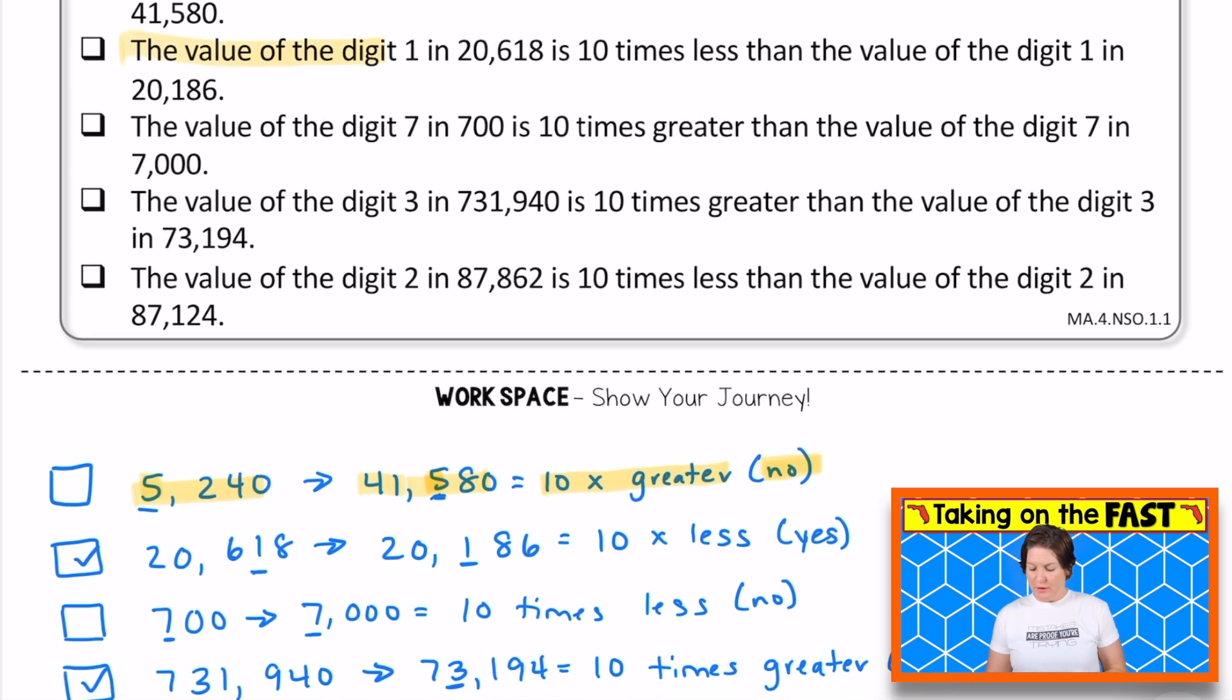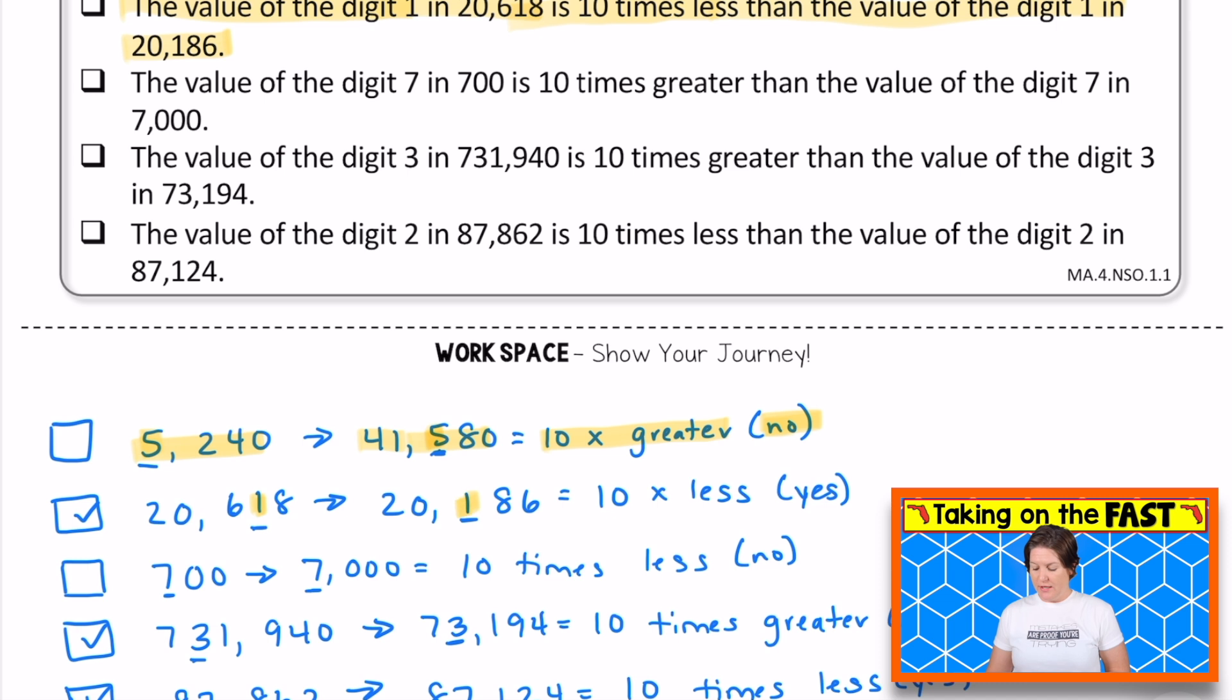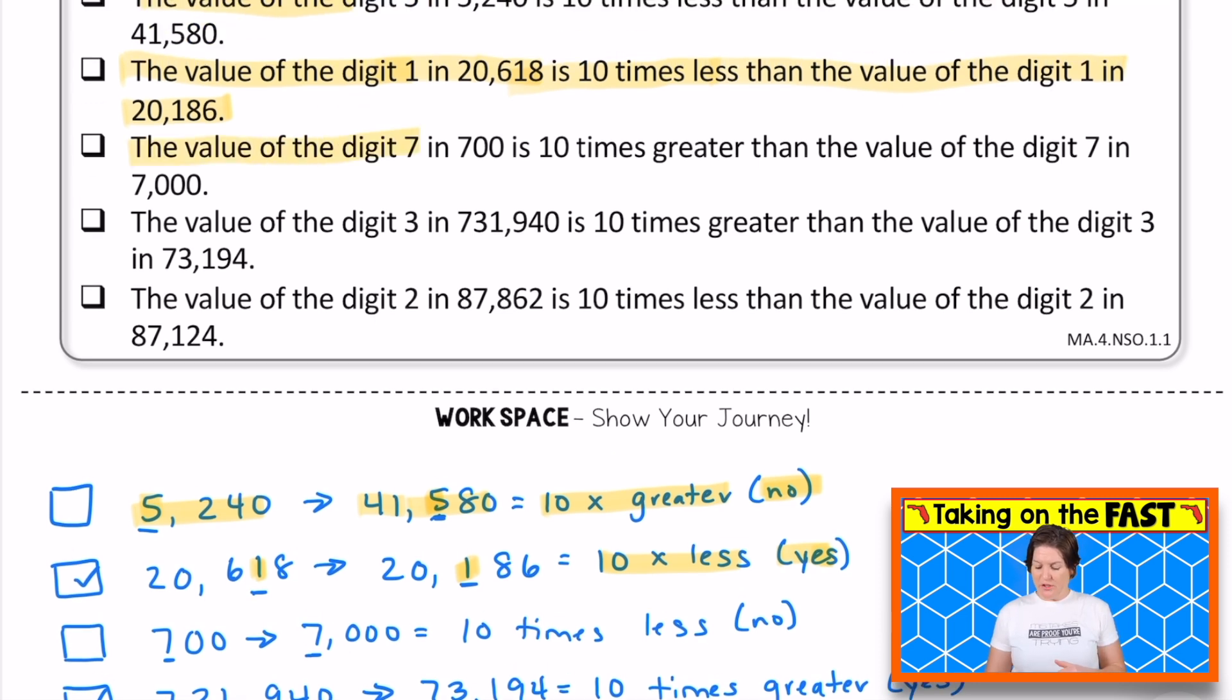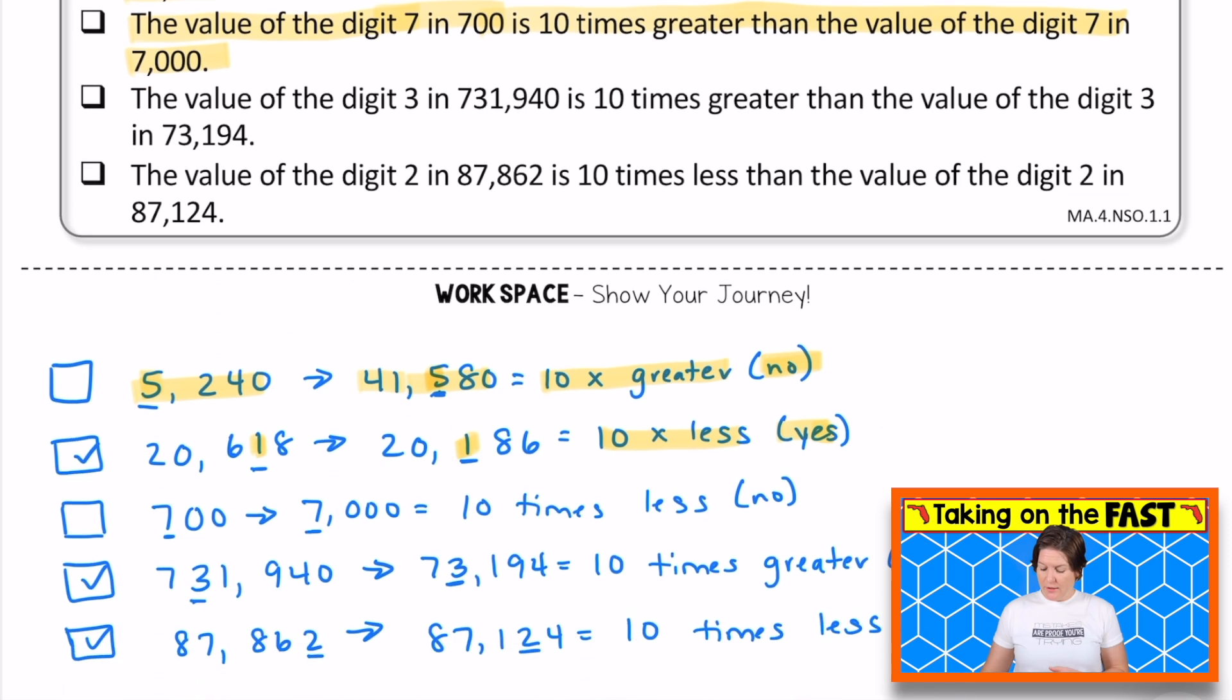For the second one, the value of the digit one in 20,618 is 10 times less than the value of the digit one in 20,186. So we're looking at the digit ones in those two numbers, and the first one is 10 times less. So yes, this is going to be a correct answer here. I'll mark that in just a minute. We've got the value of the digit seven in 700 is 10 times greater than the value of the digit seven in 7,000. We've got seven in 700 and seven in 7,000 and that 700 digit seven is 10 times less, not 10 times greater like the question says. So no.